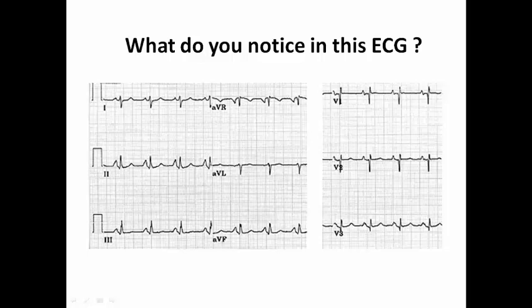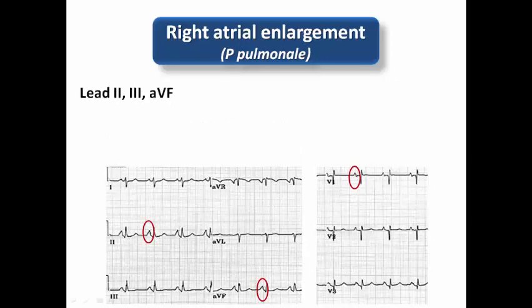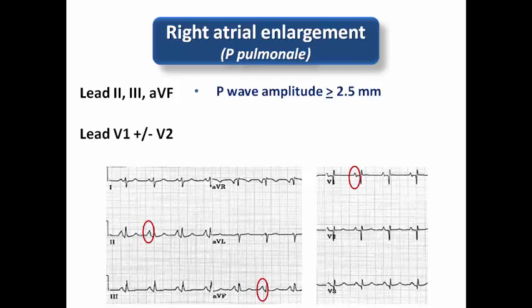In the ECG, P waves are tall especially in leads 2, 3, and AVF, and relatively tall in V1. The P waves are most prominent in the inferior leads because the amplitude cutoff in inferior leads (2.5 mm) differs from precordial leads (1.5 mm). To summarize criteria for P pulmonale: in inferior leads, P wave amplitude ≥2.5 mm; in V1 (and sometimes V2), ≥1.5 mm. Duration is not affected, unlike in P mitrale.